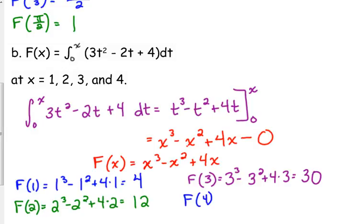And big F of four is four cubed minus four squared plus four times four. And that's just 64. Because the minus four squared plus four times four cancels. Four cubed is 64.